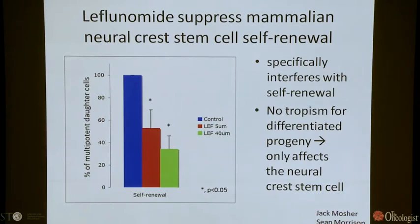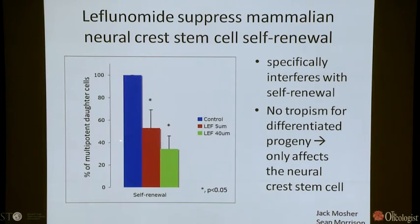To ask at what level the small molecule is working, we collaborated with Sean Morrison's lab, then at the University of Michigan, to ask whether leflunomide affects the ability of neural crest stem cells in a mammalian system to self-renew. He isolates neural crest stem cells freshly from a rat sciatic nerve and does a replating self-renewal assay. In the presence of either low or high doses of leflunomide, you see a very strong suppression of self-renewal of the neural crest stem cell population. It does not affect differentiated progeny — it really only affects the stem cell itself.